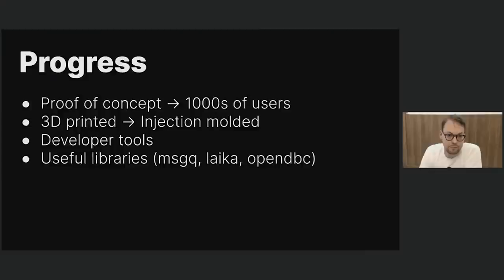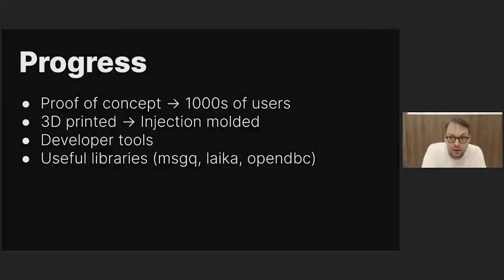Overall, we made quite a bit of progress. We went from a proof of concept to over 3,500 weekly active users, from a 3D printed case to an injection-molded case that's a real product. We built some nice developer tools and some very nice libraries. We tried to keep the number of dependencies low and resource efficient — we wrote MessageQ because we used to use ZeroMQ, a nice socket library, but it used quite a bit of CPU. So we wrote our own library using shared memory. The research team also wrote libraries for GPS processing, and we developed OpenDBC in the process.